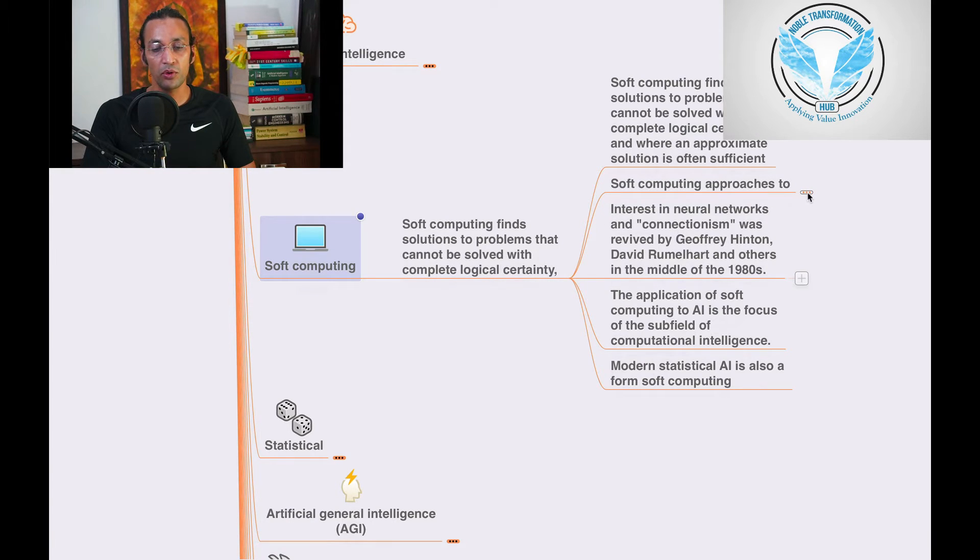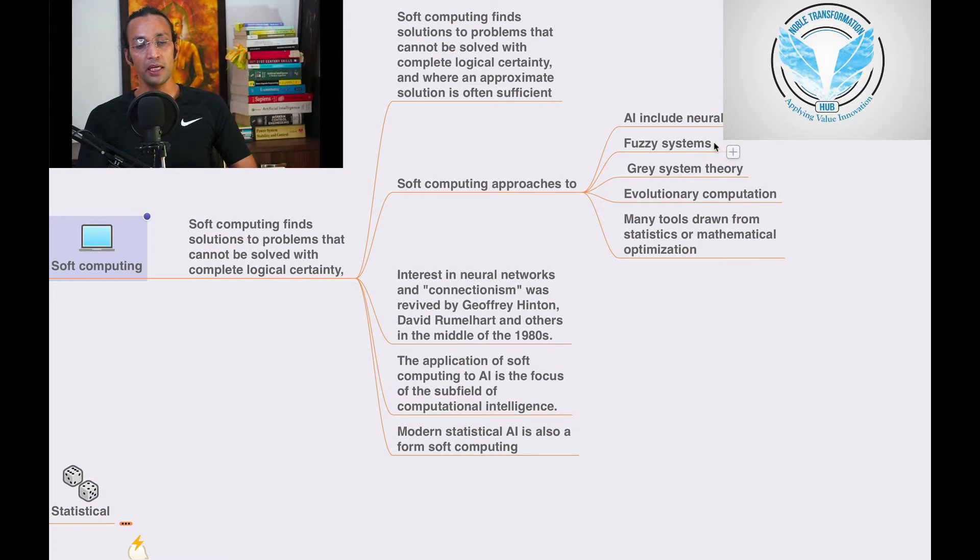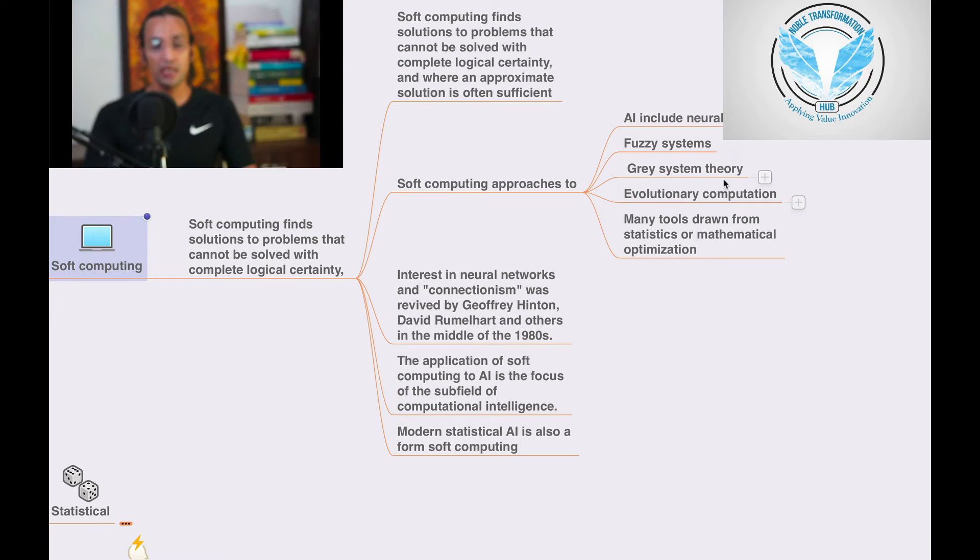Soft computing approaches to AI include neural networks, fuzzy systems, gray system theory, and evolutionary computation.